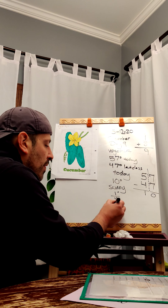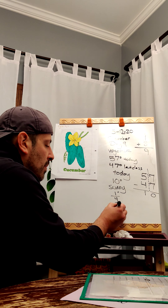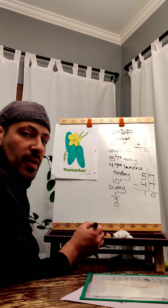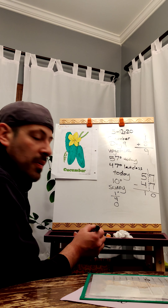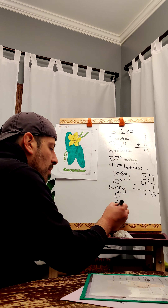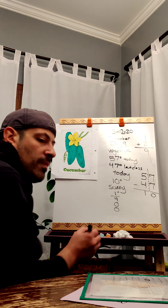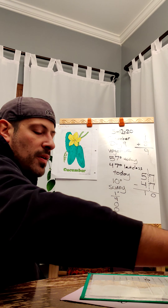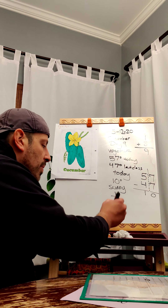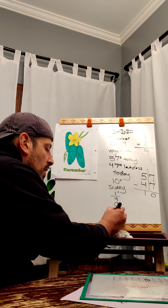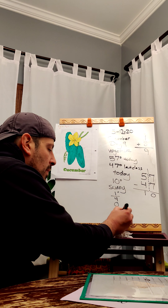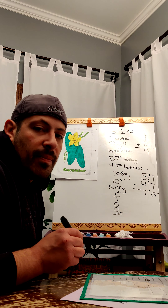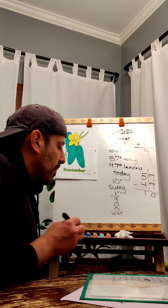We have zero flowers. I didn't see any cucumbers growing, did you? No. So zero. Our dirt is damp, so it's wet. Are we going to water it? No.